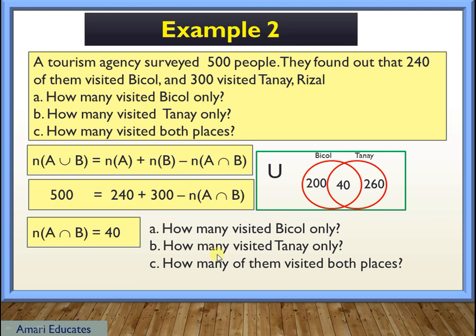So how many visited Bicol only? Only again, this part, 200. How many visited Tanay only? This one only, 260. And how many of them visited both places, or their intersection? Is 40.